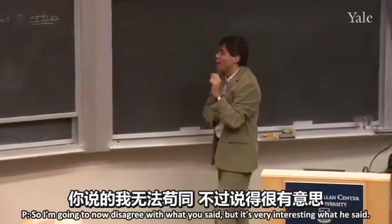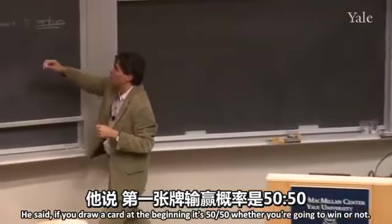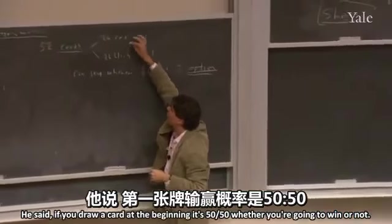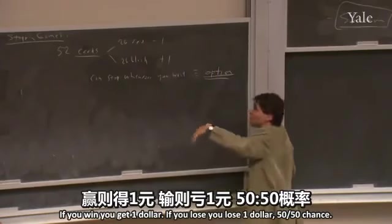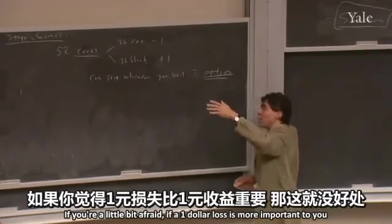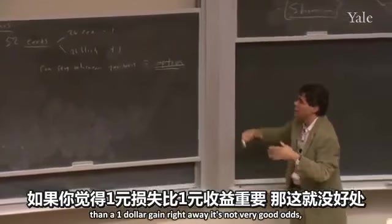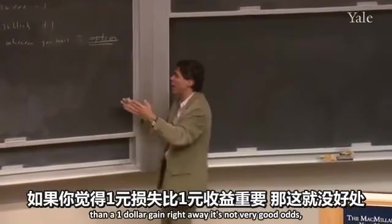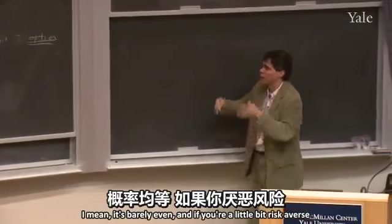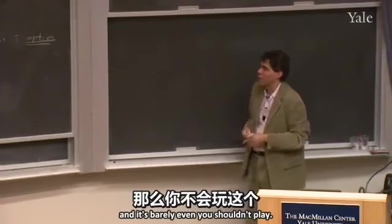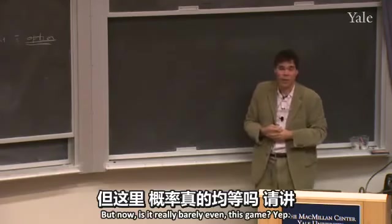I'm going to disagree with what he said. He said: if you draw a card at the beginning, it's 50-50 whether you win or lose. If a dollar loss is more important to you than a dollar gain — that is, if you're a little bit risk averse — it's barely even, and you shouldn't play. But is it really barely even this game? If you draw the first 26 red cards, at that point you go to the end and haven't lost anything. You can't possibly lose if you play this right — you can always go to the very end of the deck.